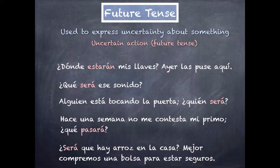¿Será que hay arroz en la casa? Mejor compremos una bolsa para estar seguros. Because of the uncertainty, ¿será que hay? means 'Could it be, or is it true, that there is rice at home? Let's buy a bag just to be sure.' You can tell from the use of the future tense that there's a lot of uncertainty about whether there is rice or not. So again, this is the future tense being used to express uncertainty about something.